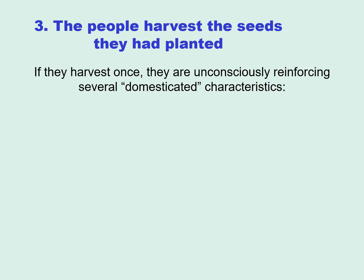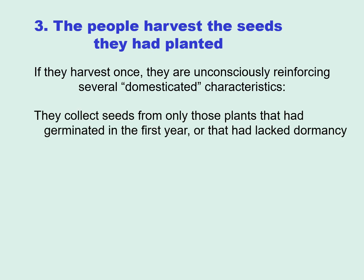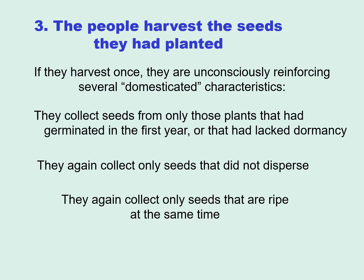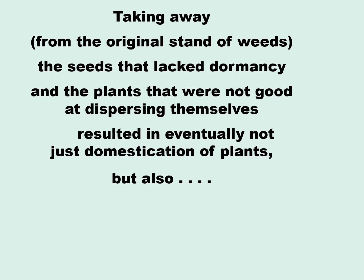If you harvest the seeds that you had planted, you may be unconsciously reinforcing several domesticated characteristics. If you harvest only once and collect seeds only from those plants that germinated in that first year after planting, you are collecting only seeds that lack dormancy. And again, you're collecting seeds that did not disperse themselves very well, and only seeds that are ripe at the same time — without that variability in ripening times. Interestingly, by taking away from the original stand the seeds that lack dormancy and seeds that were not good at dispersing themselves, you are not only potentially ending up with more domesticated plants, but you're creating weedier weeds back at the original stand.